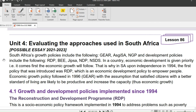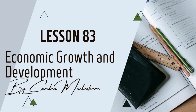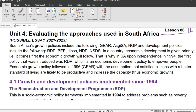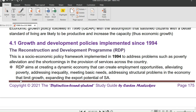After independence in 1994, the first policy the South African government introduced was RDP, which is an economic development policy to empower people. As explained in Lesson 83, growth has to do with things and development has to do with people. An economic growth policy followed in 1996 in the form of GEAR, with the assumption that satisfied citizens with a better standard of living would be more productive and increase the production capacity of the country.